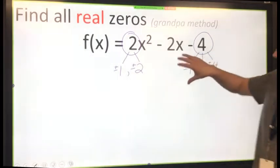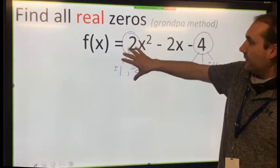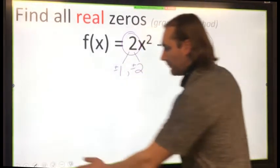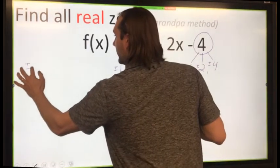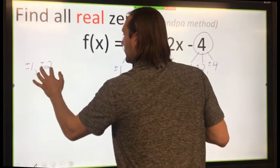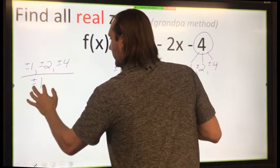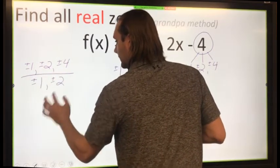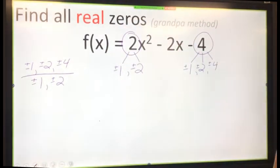Now I'm going to take all of these values here with my constant, my multiples, and divide them by all of my multiples of the leading coefficient. So to better organize this, I want to put plus or minus 1, plus or minus 2, and plus or minus 4 all over plus or minus 1 and plus or minus 2 so that I can easily see how I should simplify this.